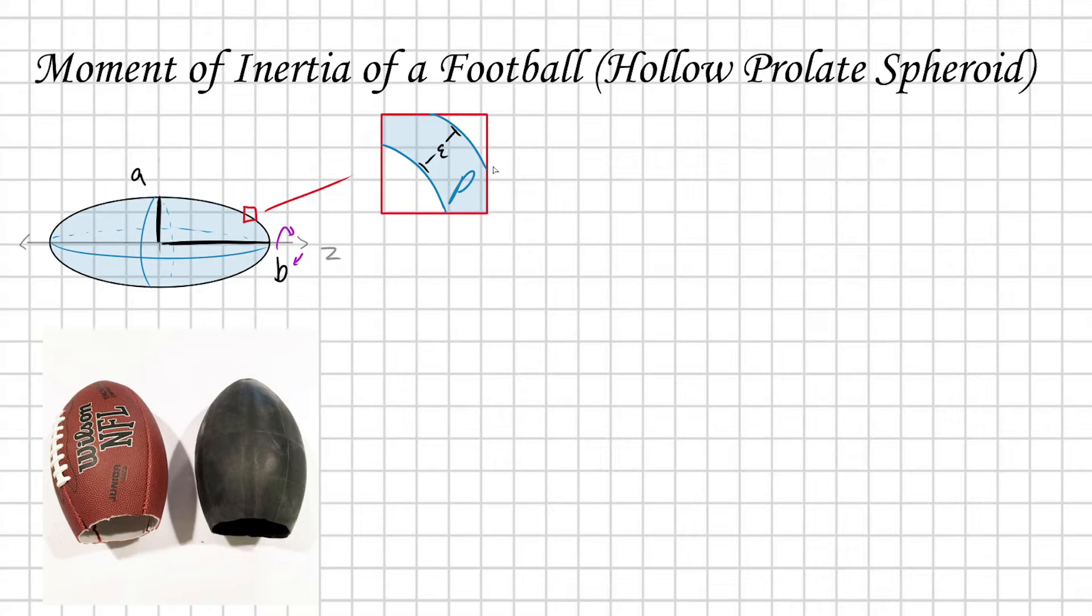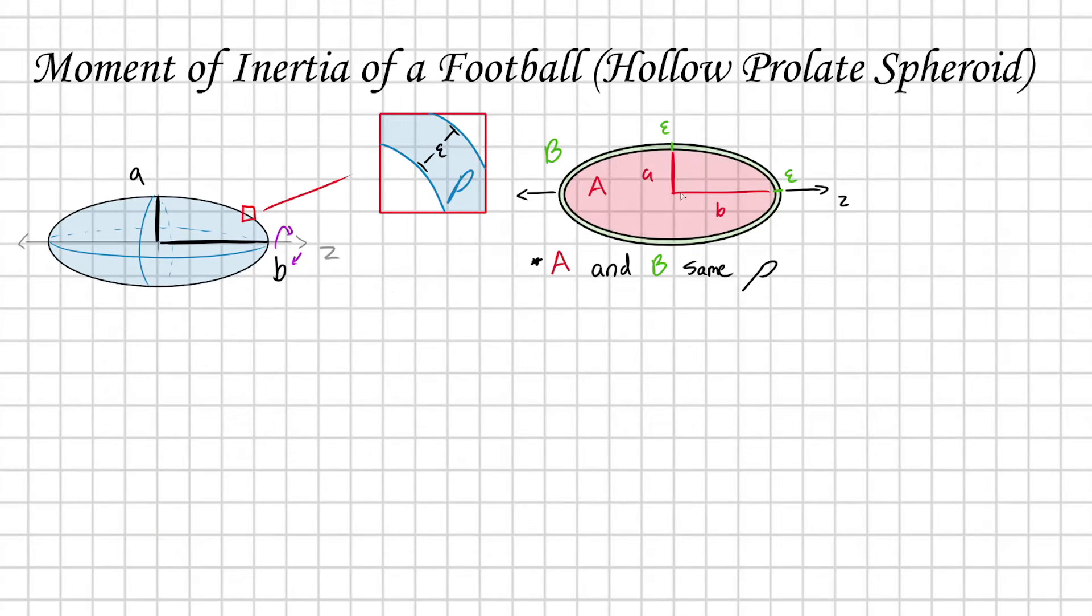We're going to calculate the moment of inertia of this prolate spheroid shell using the superposition principle for moments of inertia. Here I have A, a solid spheroid, and surrounding A with some thickness epsilon is a shell which I'm calling B. A and B both have the same mass density rho. When you put A plus B together, you get a slightly larger spheroid.